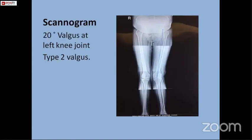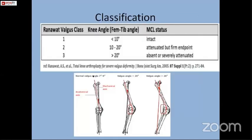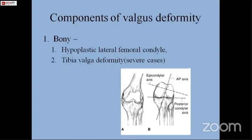Before going to the result, I will briefly cover the basic principles of valgus knee correction. Ranawat et al. has classified valgus knee into three types depending upon the femorotibial angle and the intactness of the medial collateral ligament. The components of valgus deformity are a bony component and a soft tissue component. The bony component involves a hypoplastic lateral femoral condyle, which is present in both coronal and sagittal planes, giving valgus and external rotation deformity. In very severe cases, there are metaphyseal changes in the tibia, contributing to tibial valgus and extraarticular deformity.